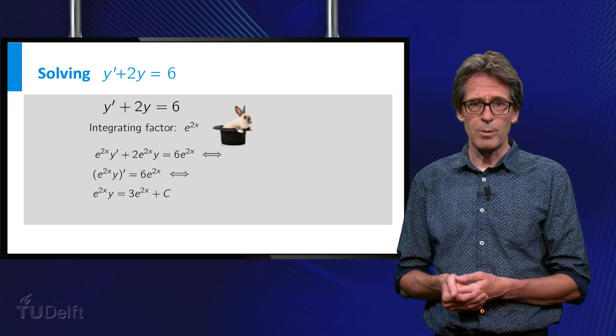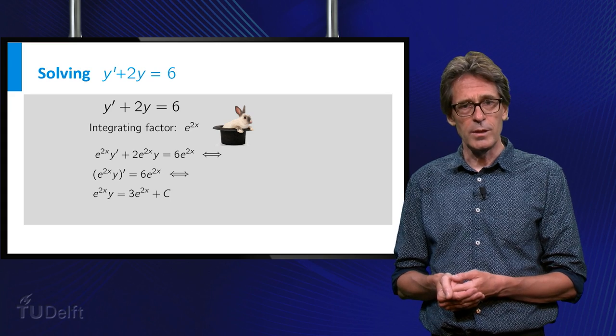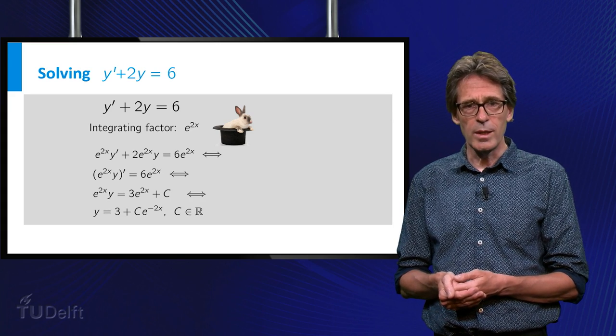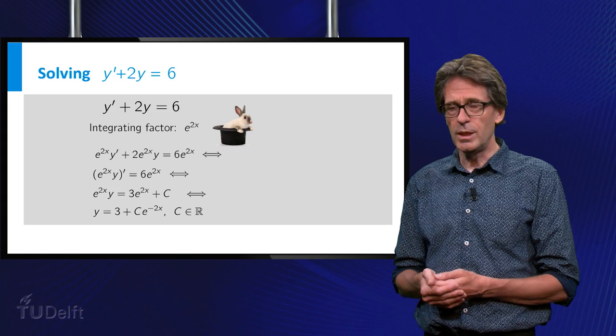Divide both sides by e to the 2x and you find the explicit solution y equals 3 plus c times e to the minus 2x.